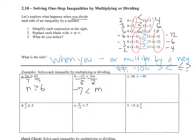But letter c: I'm dividing by a negative 9. When I'm dividing by a negative 9, this greater than symbol now changes to less than. This 36 divided by negative 9 is negative 4. In letter d, it's x divided by 4 is less than or equal to 2, so I'm going to multiply both sides by 4. I don't change the direction because I'm multiplying by a positive. So it's x is less than or equal to 8.